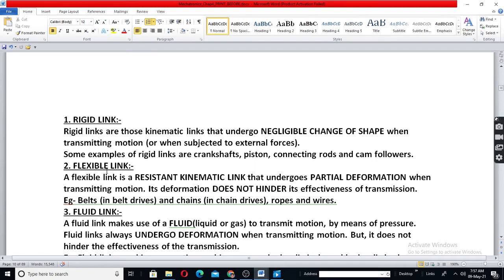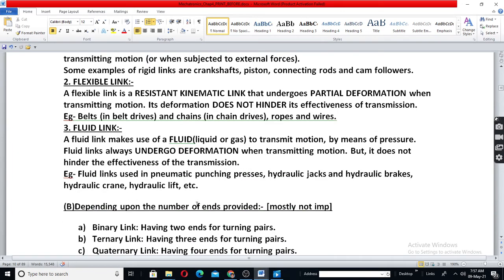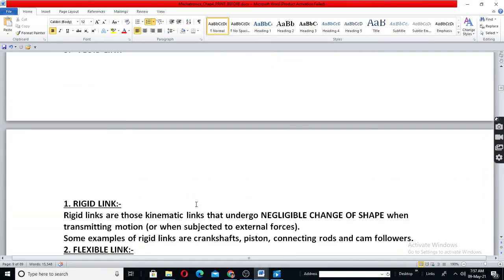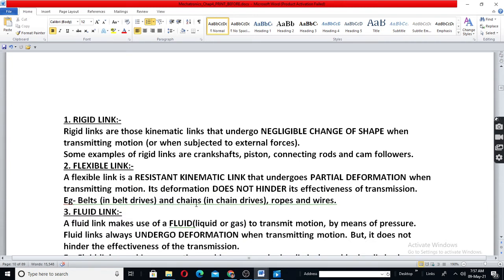Flexible link means it goes partial deformation. For example, chain and belt drive. There it goes partial deformation. But when the belt is elongated, chain is elongated, it acts as resistant body for the purpose it is made. Hence, even though it goes partial deformation, it does not hinder the effectiveness of transmission of force and power and motion.